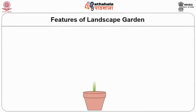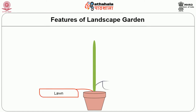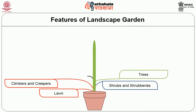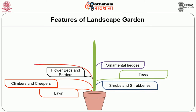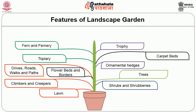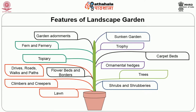Features of landscape garden. In the landscape garden, we have the following features: lawn; shrubs and shrubberies; climbers and creepers; trees; flower beds and borders; ornamental hedges; drives, roads, walks and paths; carpet beds; topiary; trophy; fern and fernary; sunken garden; garden adornments.